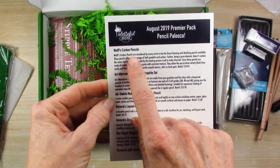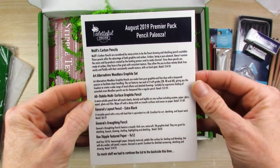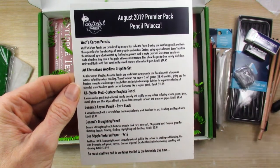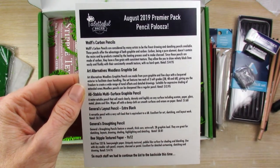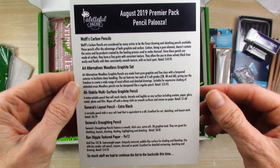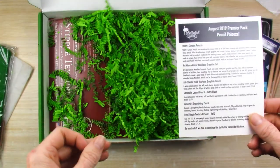So these carbon pencils. Finest drawing and sketching pencils available. They offer advantages of both graphite and carbon. Doesn't contain the resins and byproducts created by the process used to make charcoal. And they have a fine grain with a consistent texture. Cool. That should be fun.